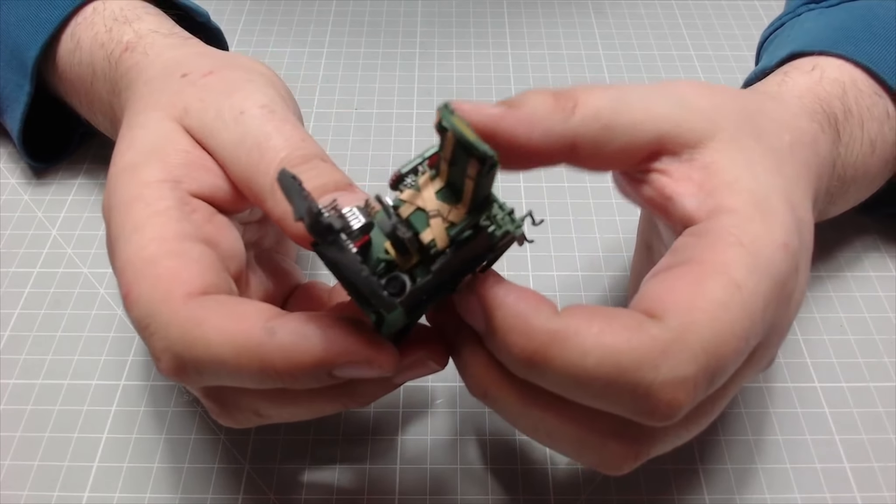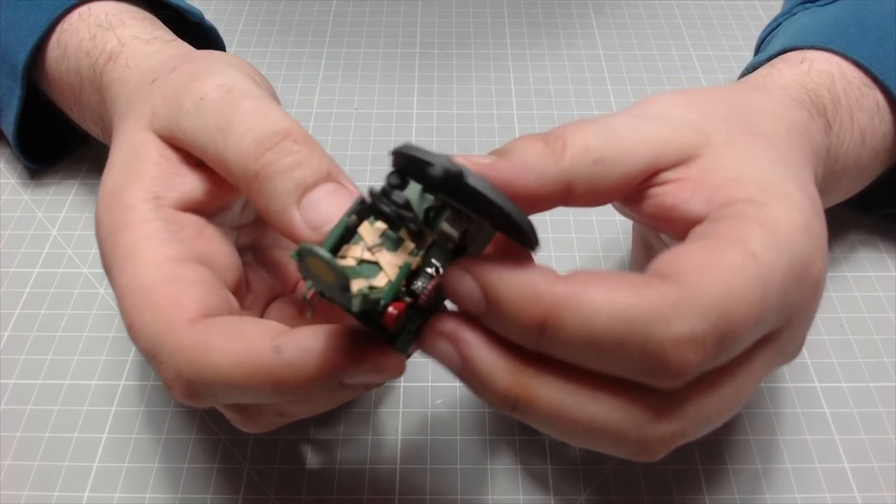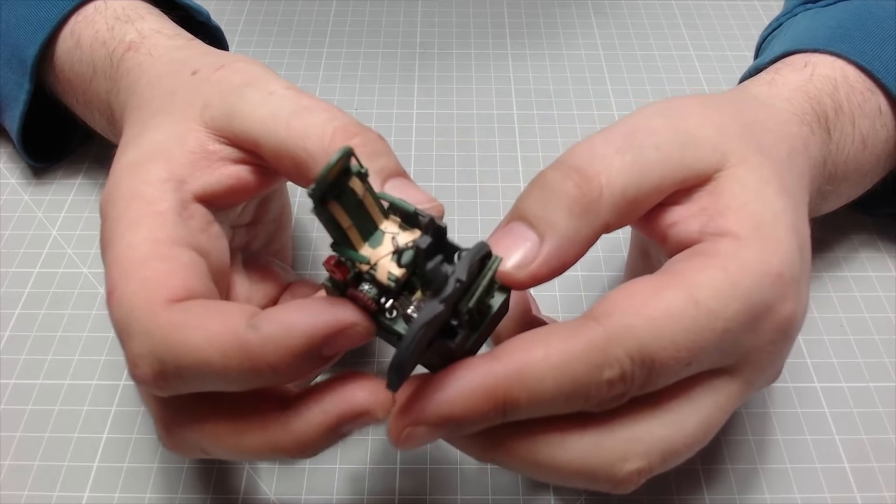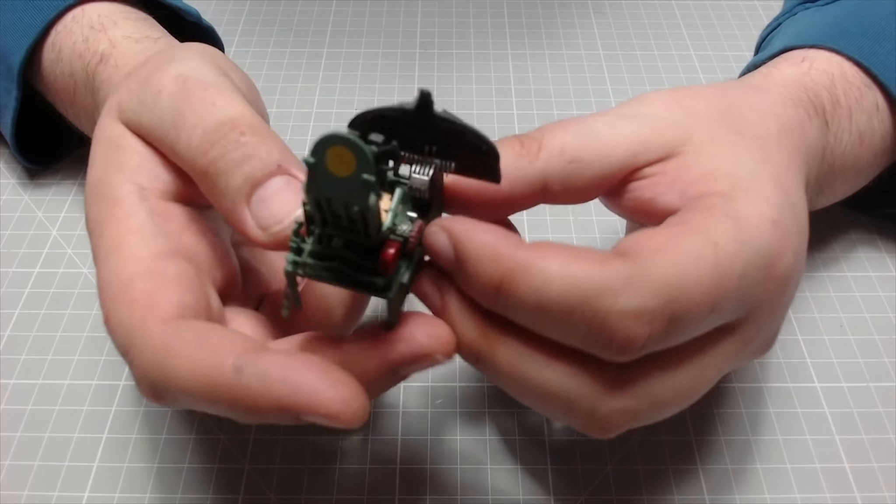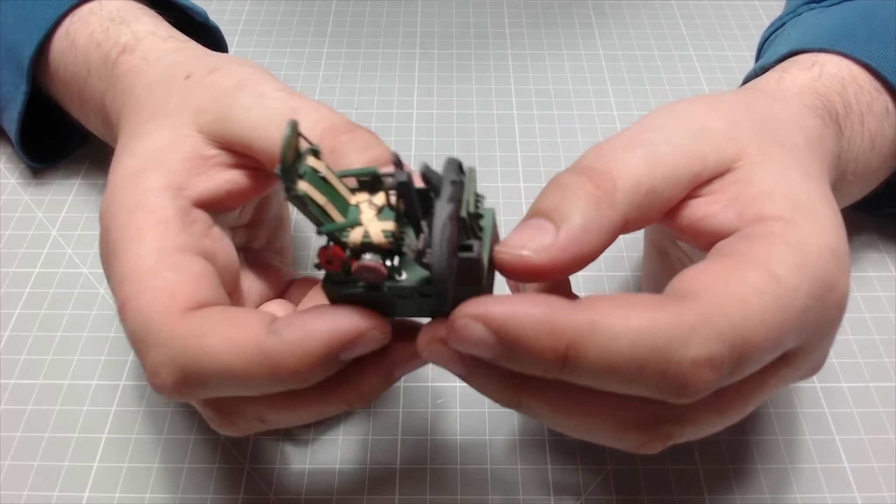Wow, and there we have it guys. That is our finished cockpit floor, cockpit pilot seat. We've got the yoke and we've got the instrument panel in place. Amazing, absolutely amazing. That looks superb, and that is all there is to do in this issue.